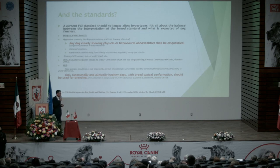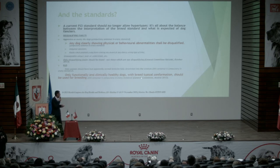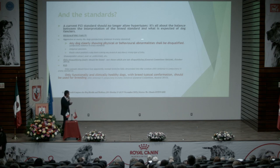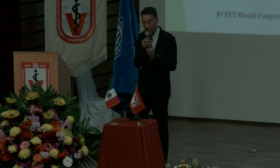In the FCI standard model, you can see two very important things that I have highlighted in red. First: 'Any dog clearly showing physical and behavioral abnormality should be disqualified.' Second: 'Only functionally and clinically healthy dogs with breed-typical conformation should be used for breeding.' With these two sentences, we normally have no possibility, if we follow the FCI standard, to fall into hypertypical animals.